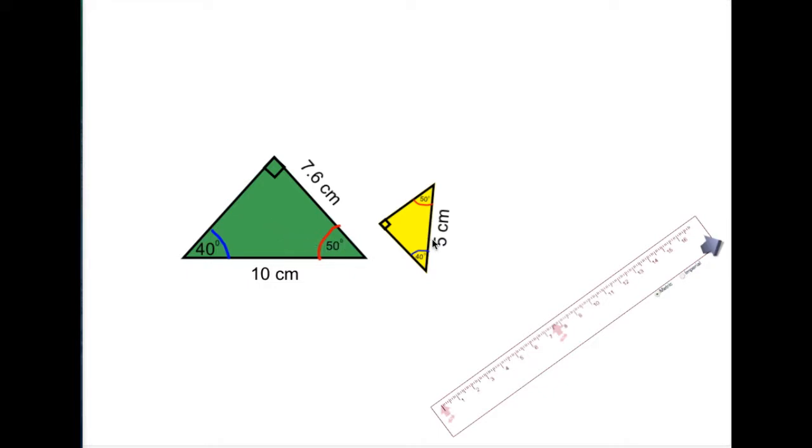What's interesting about this angle-angle-angle relationship is that if this side is half as big as this side, then the other sides of the triangle will follow the same rule. So this one is 7.6 centimeters long. This triangle should be half of 7.6 on this line, and we'll test that with our ruler.